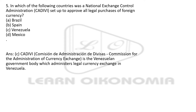In which of the following countries was the National Exchange Control Administration set up to approve all legal purchases of foreign currency? Options are Brazil, Spain, Venezuela, and Mexico. The right answer is option C — Venezuela. The body is known as Cadivi, which is a Venezuela government body dealing with legal currency exchange in Venezuela.